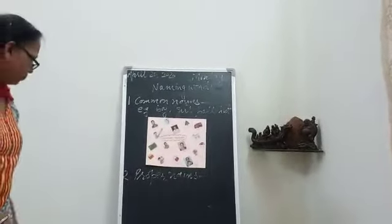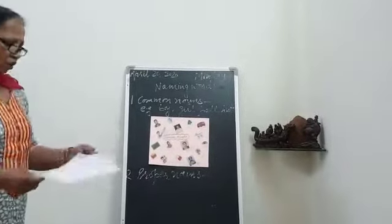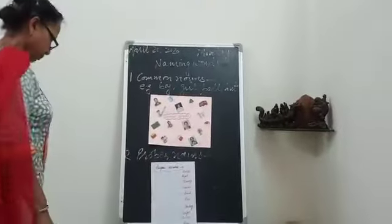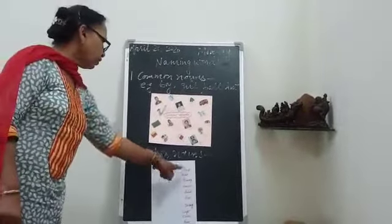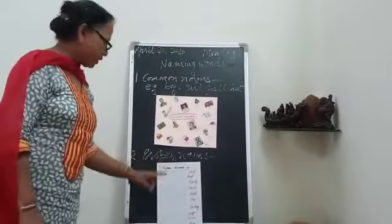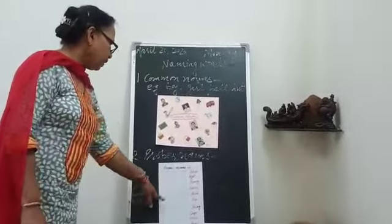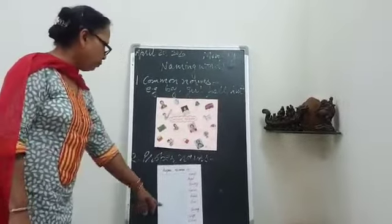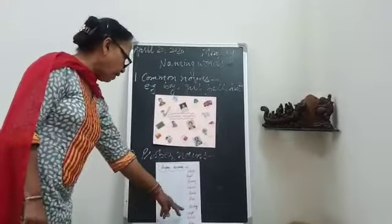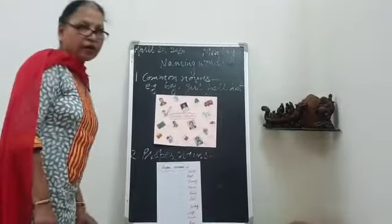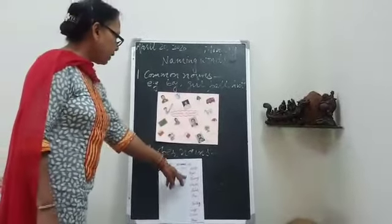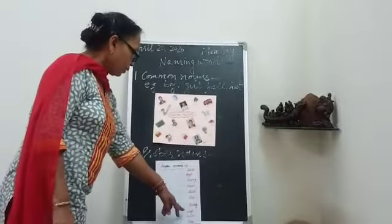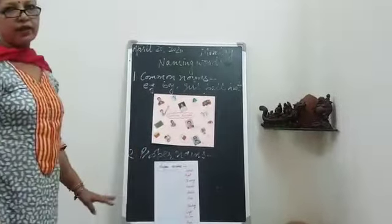Now I will show some examples of proper nouns. Name of a girl: Aditi. Name of a boy: Rajat. Name of a dog: Tommy. Name of a woman: Neeru. Name of a student: Rahul. Name of a tree: Pine. Name of a car: Swift Desire. Name of a flower: Rose. So Aditi, Rajat, Tommy, Rahul, Pine, Jackie, Swift, Desire, Rose, etc. are all proper nouns.